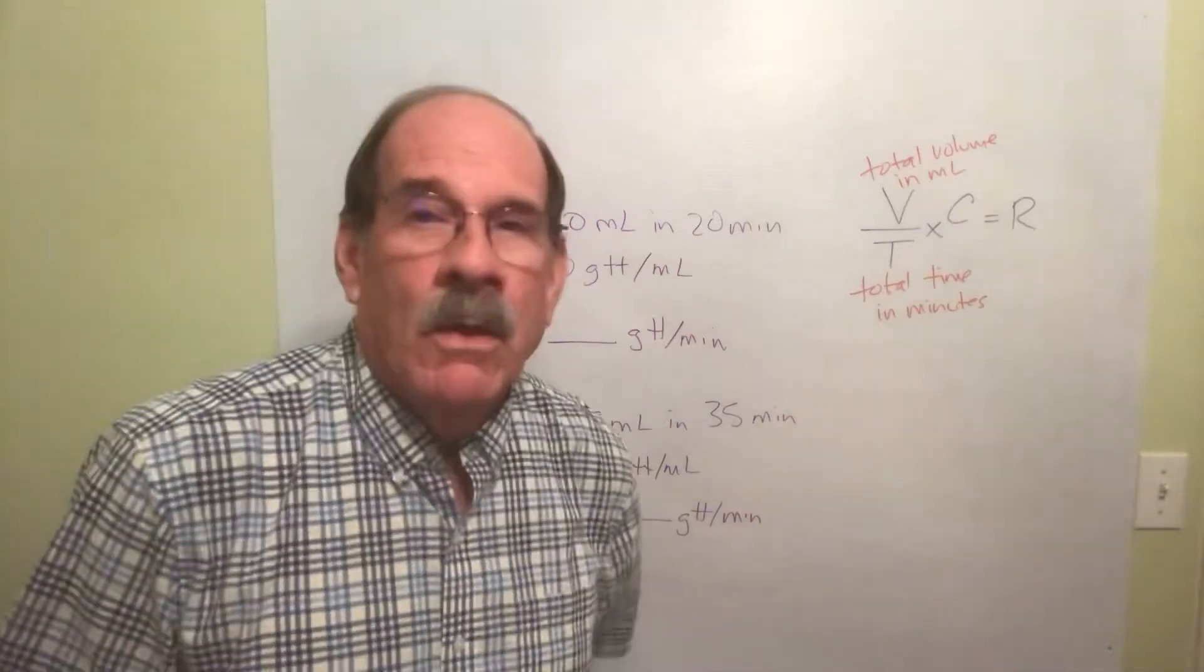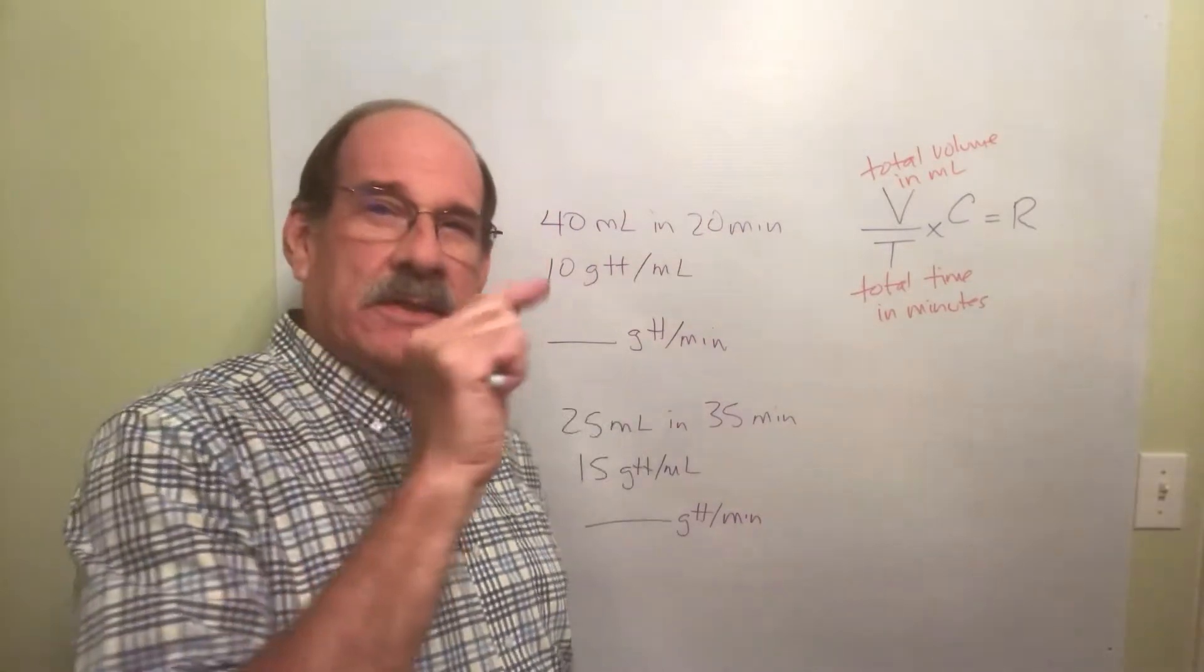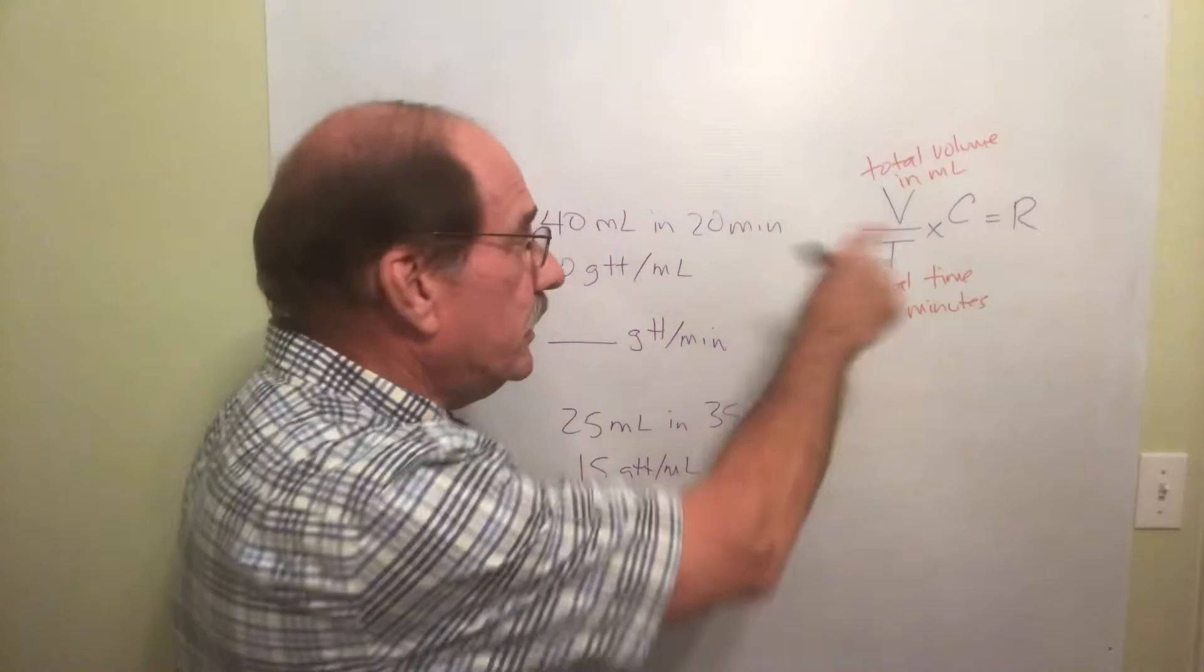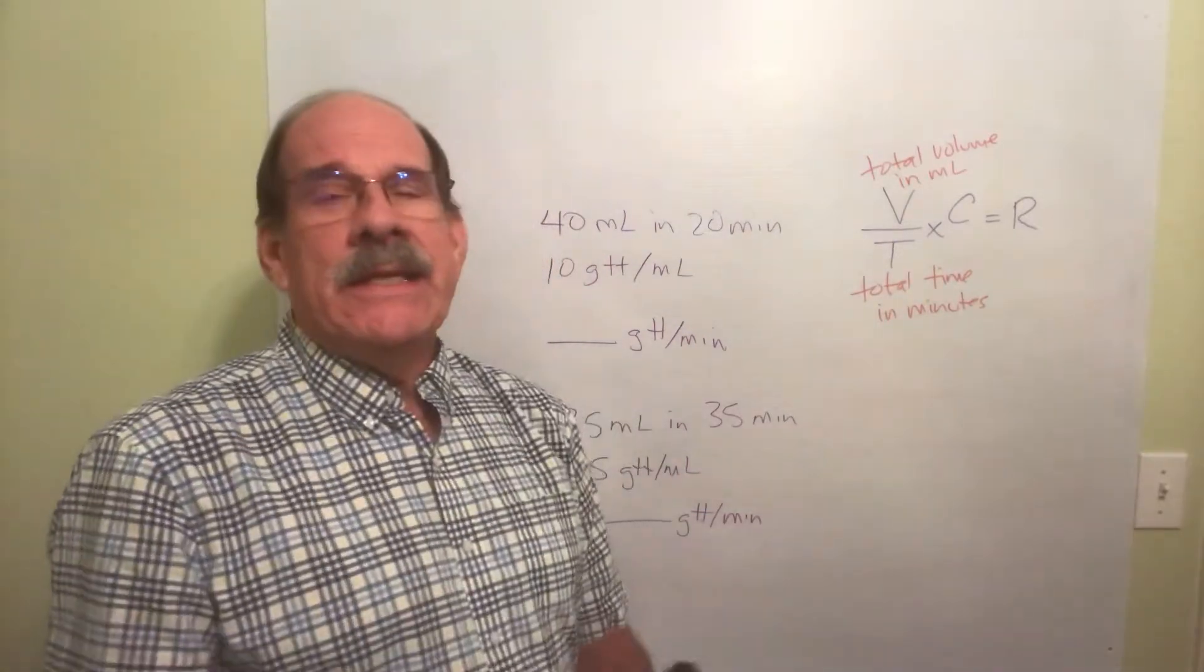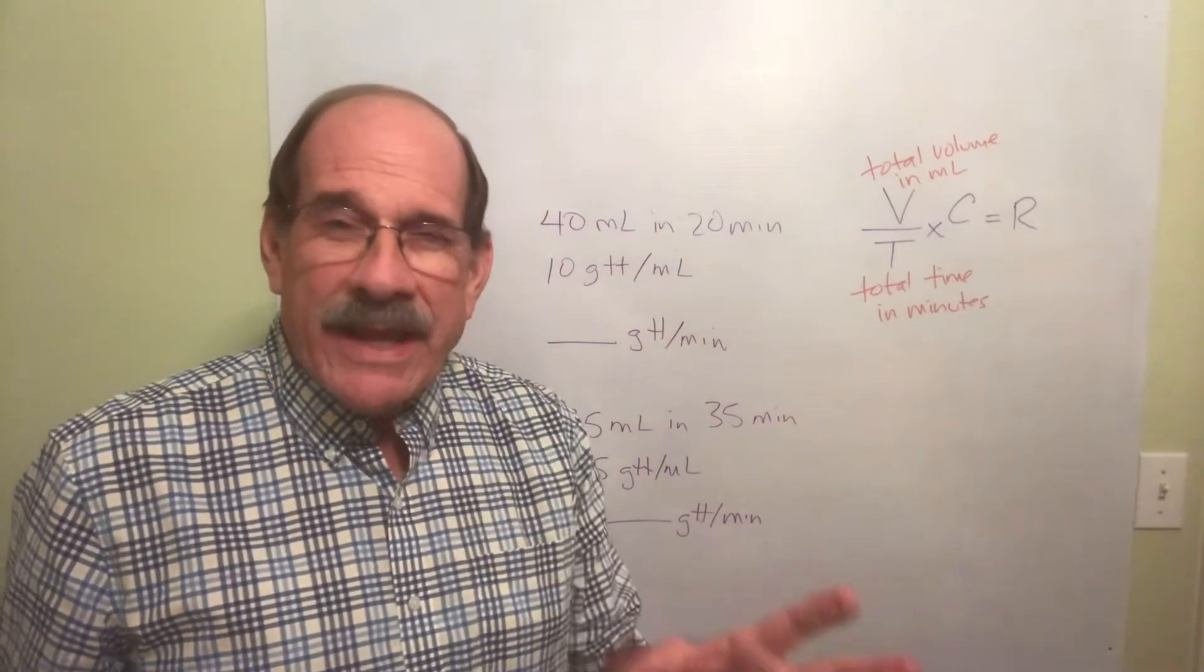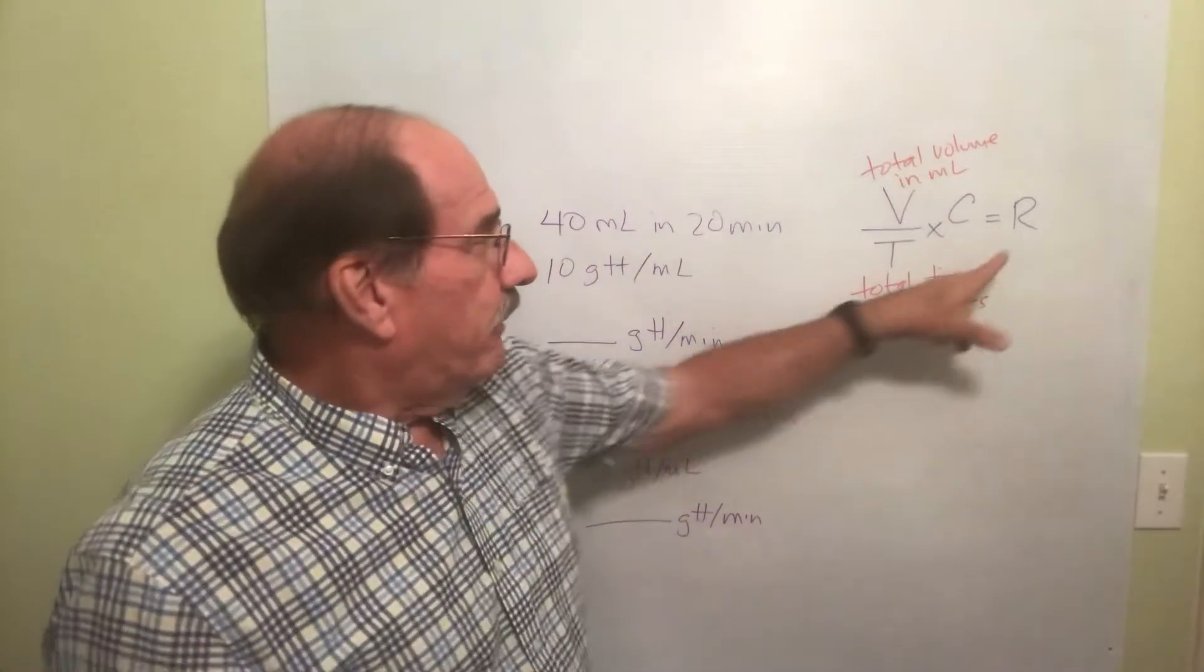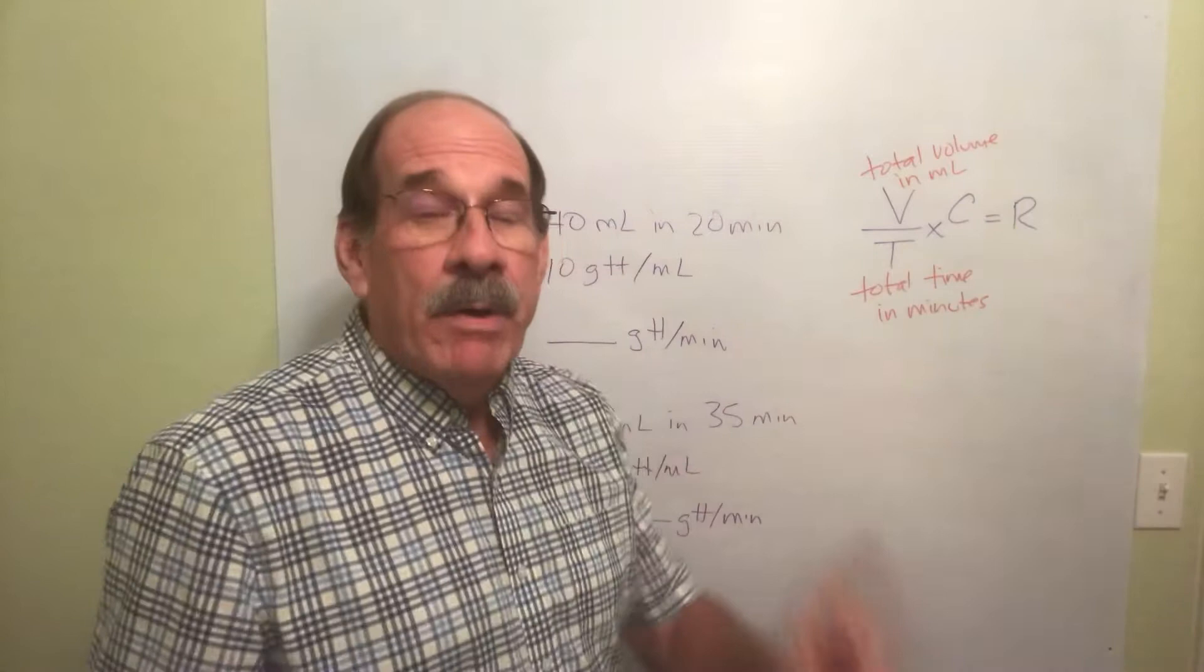We're almost done with this. One more time. This is a continuation of the stuff we discussed in the other video about this alternative method for using the V over T times C equals R formula anytime you're looking for drops per minute. Because you don't have a machine to give the IV with, you have to find the drops per minute and you use this to do so.